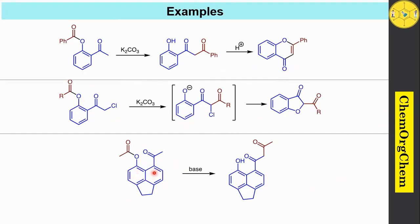Similarly, if you have an acyloxy group in the peri-position, when you use base, this type of compound also undergoes Baker-Venkataraman rearrangement to produce the corresponding 1,3-dicarbonyl compounds.